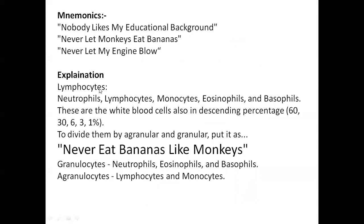These three sentences stand for the white blood cells arranged in descending percentages. The order is: neutrophils, lymphocytes, monocytes, eosinophils, and basophils. So in 'Nobody likes my educational background': Nobody = neutrophils, likes = lymphocytes, my = monocytes, educational = eosinophils, and background = basophils.